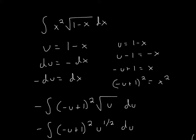Now remember, even though we now have a square root of u as we substitute in, we still have x squared, and we can't take the integration of two different variables. So what we can do is take the same equation and try to get x squared from it, so we can substitute it with a u version.